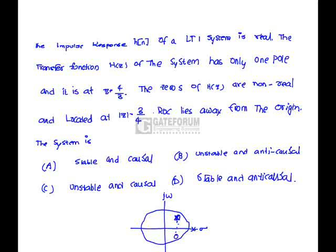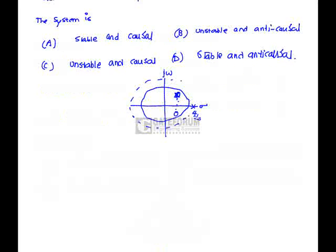Here the pole is located outside the unit circle, 4 by 3. And from the above data, from that it is away from the origin, means it is a right-sided ROC. But one more rule for the ROC is, ROC should not contain any poles and it has to be away from the origin according to the data present in the question. So the ROC is going to be outside of the pole. This is ROC.